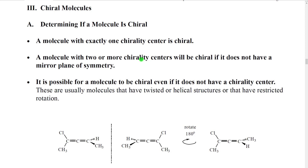In the same way that we had polar bonds and then we had polar molecules, we can have chiral atoms, chirality centers, and then we can have chiral molecules. How do we determine if a molecule is chiral? Ultimately, the only way to be a hundred percent sure would be to build a model, then build the model of the mirror image, and see if they can be superposed. However, there are shortcuts. A molecule that has exactly one chirality center will always be chiral — it just inherits the chirality from that one chirality center.